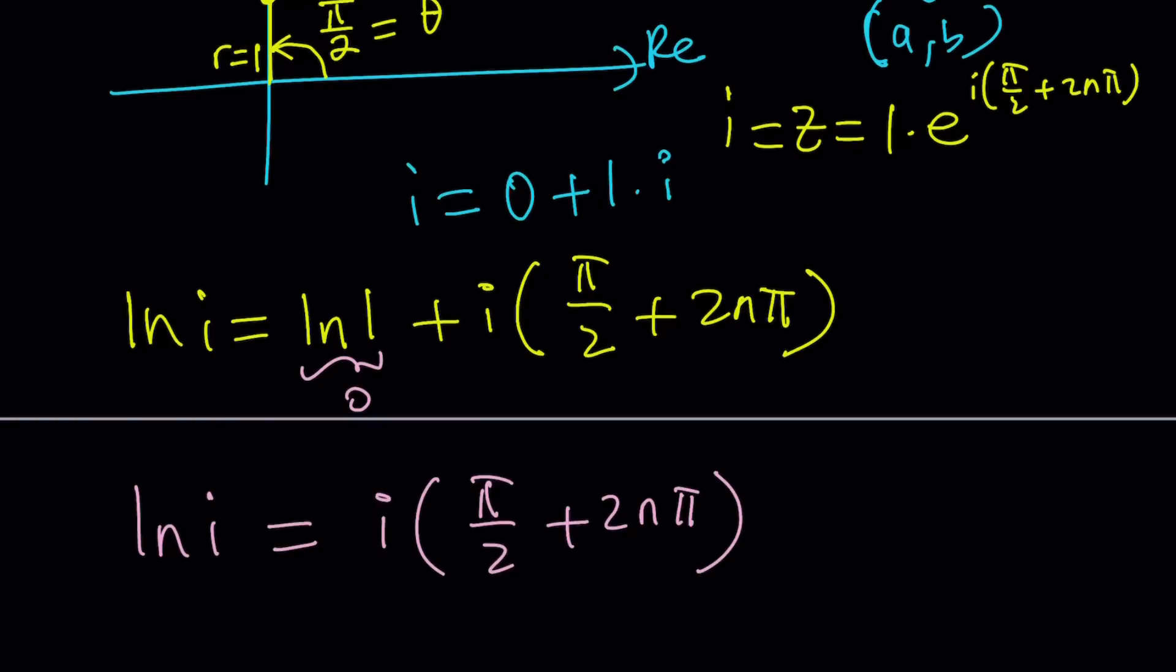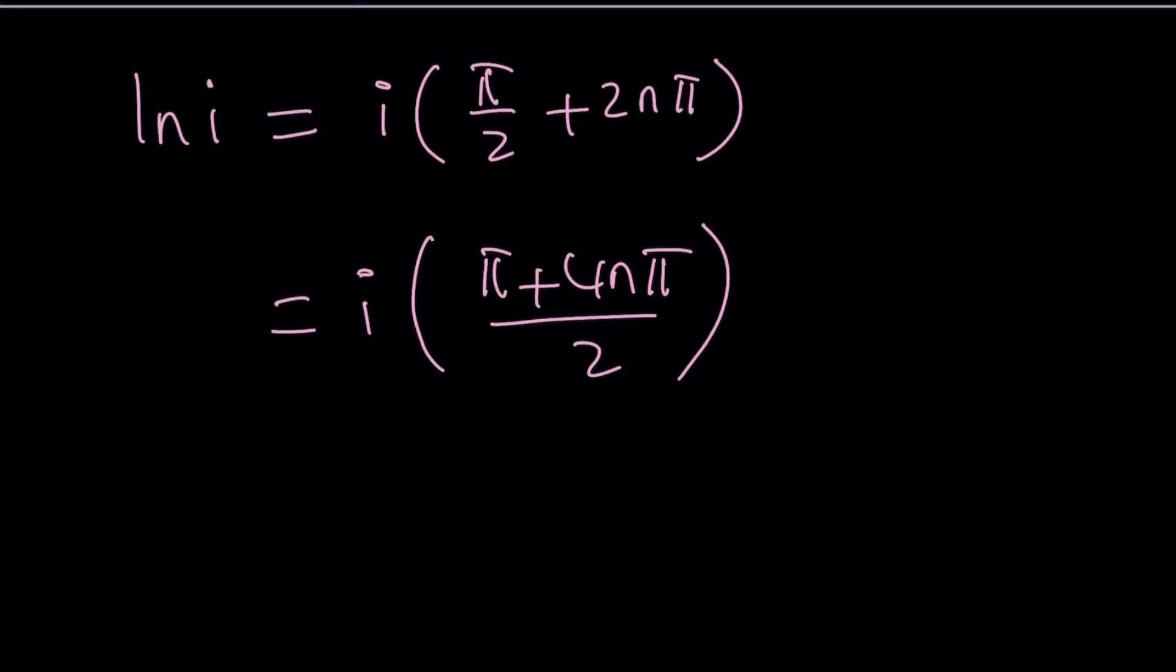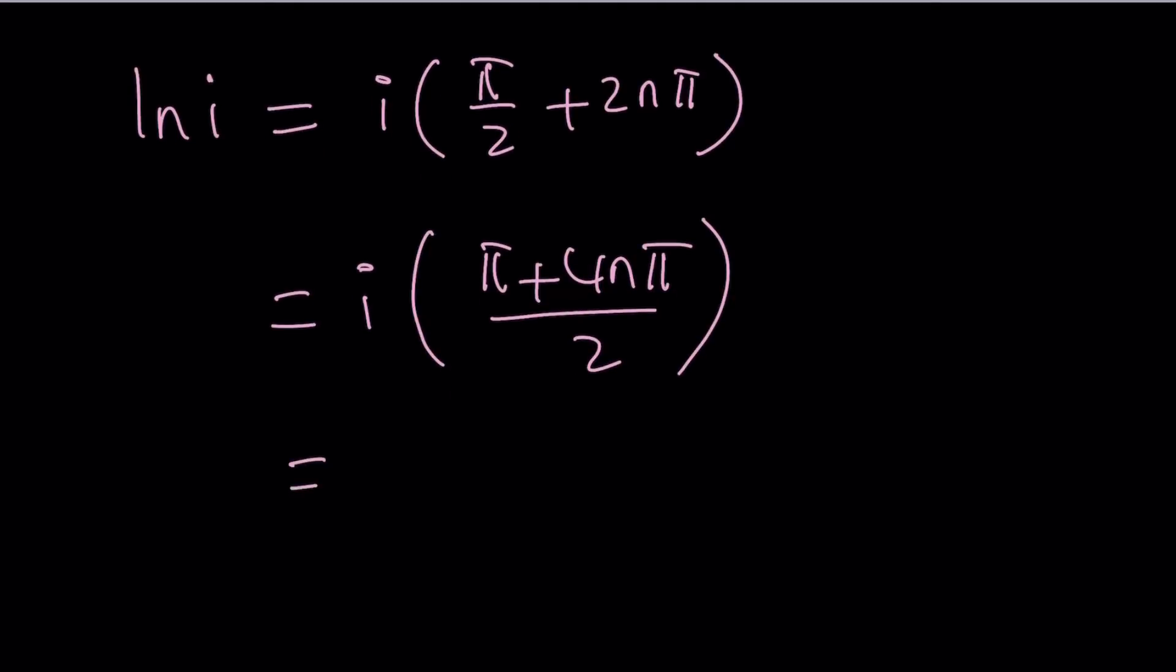Okay. So, we can simplify this a little bit by making a common denominator. I don't know if it would be considered simplification, but let's go ahead and do it. Let's make a common denominator. That would be π plus 4nπ over 2. And then we can factor out a π here and write this as 4n plus 1 times πi over 2. So that would be the value of ln i.